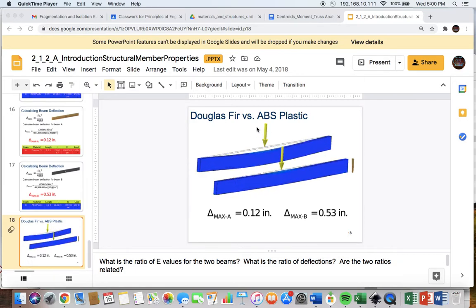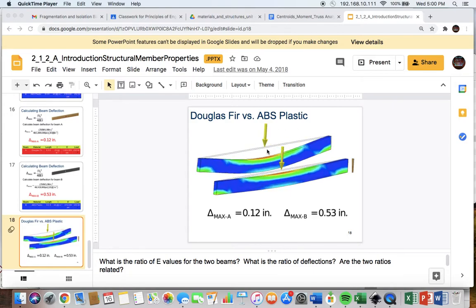So in this case we're comparing Douglas fir, what Christmas trees are, versus ABS plastic. You can see that the top beam here, made of ABS plastic, bends significantly more than the Douglas fir under the same amount of force at its center. And again, it's because of its material differences.